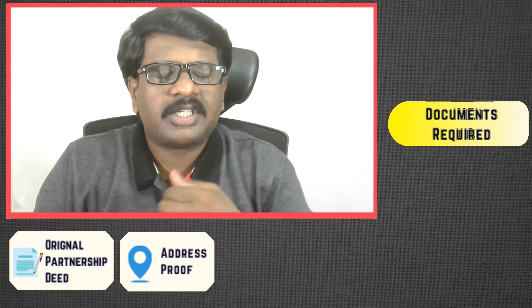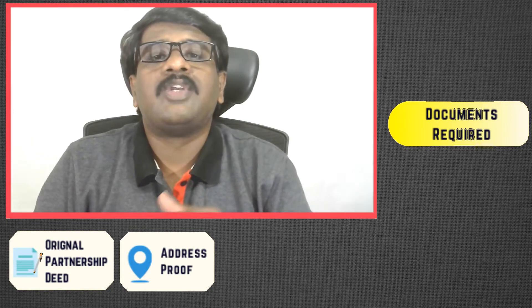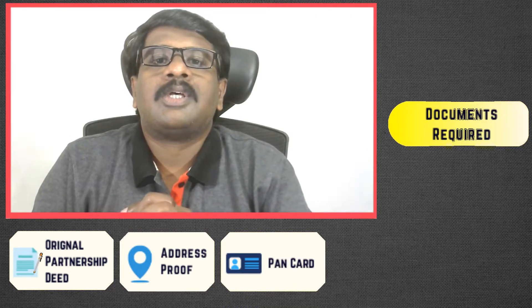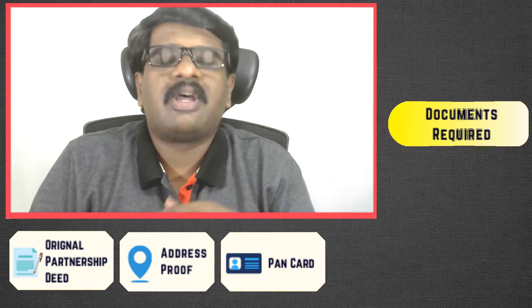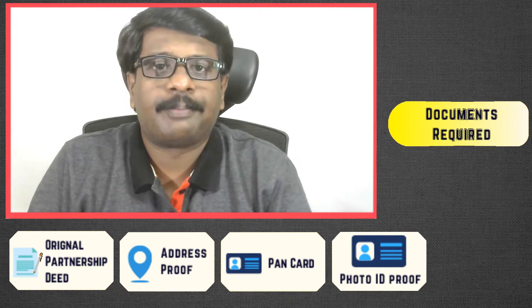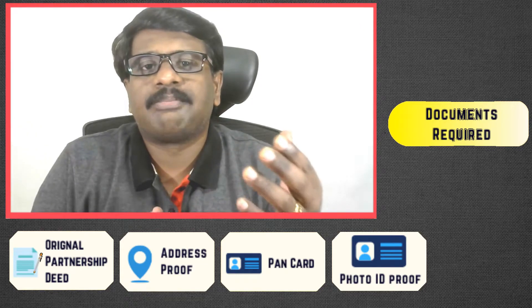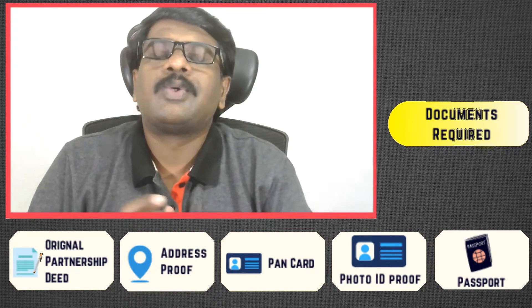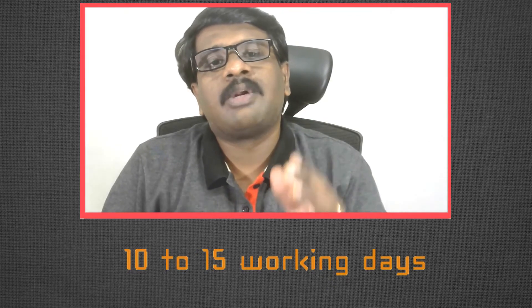Once the partnership deed, utility bills, and rental agreement are ready, you need to submit a copy of the company PAN card. After that, you need to provide photo ID proof and address proof of all the partners of your firm. If any of your partners is a foreign national, you need to submit the passport of that particular partner. Once you submit all your documents and they are verified, it will take somewhere around 10 to 15 working days to get your partnership firm registered.